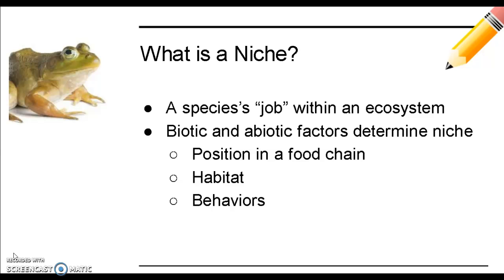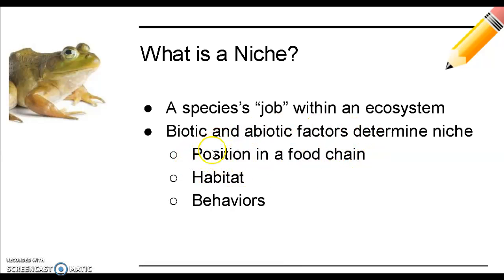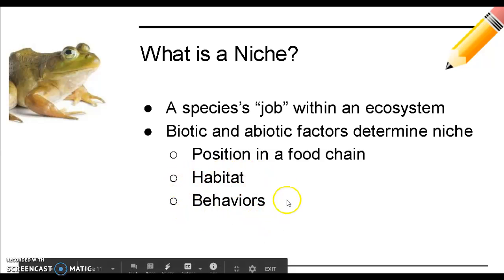A vocabulary term you will hear throughout this unit is niche — a species' job within an ecosystem. A species' niche is determined by both biotic and abiotic factors. A species' job includes its position in a food chain: what it eats and who eats it, its habitat or where it lives, how it impacts abiotic factors in the area — for example, a beaver building a dam and how it affects water flow — and its behaviors, meaning what the organism does.